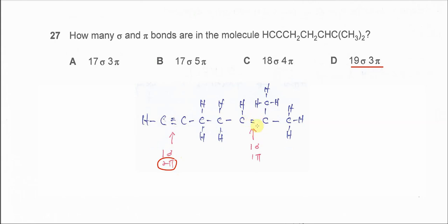This C-C double bond, it must have one sigma, one pi. So total pi bond is 3. Okay, answer is D. Okay, that's all. Thank you.